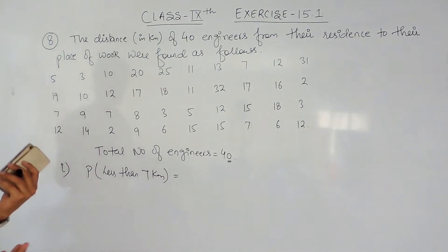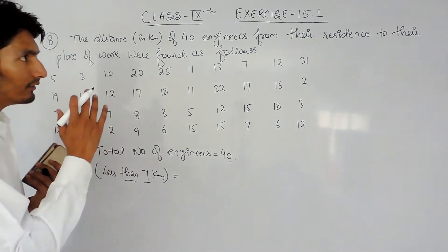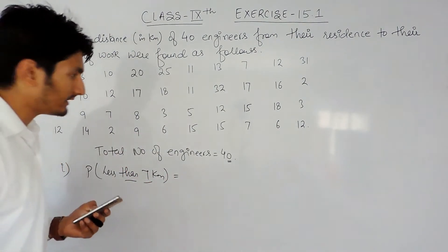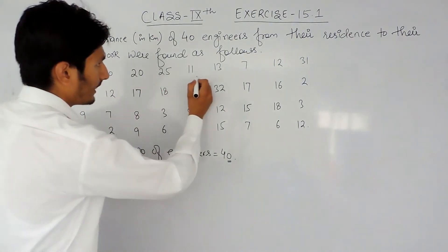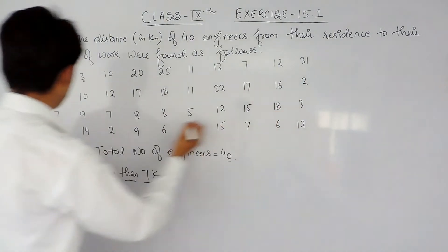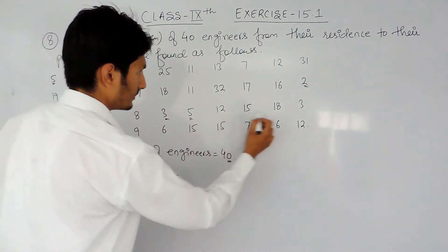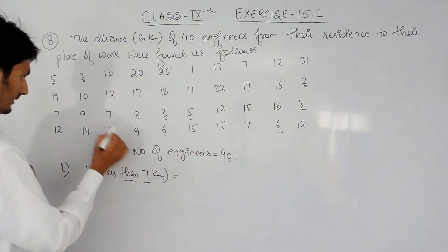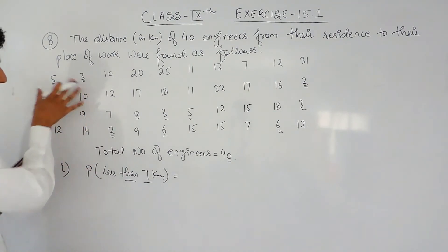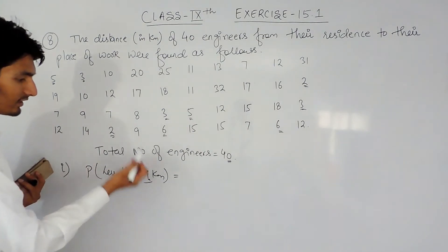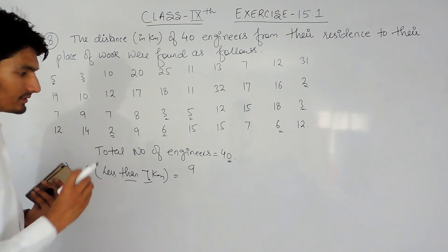Out of these 40, let's find how many times this event has occurred — where the distance from residence to workplace is less than 7 km. Counting through the data, 9 engineers have their workplace less than 7 kilometers away from their home. So out of 40 trials, this event has occurred 9 times. Therefore the probability is 9 over 40. This is the answer for the first case.